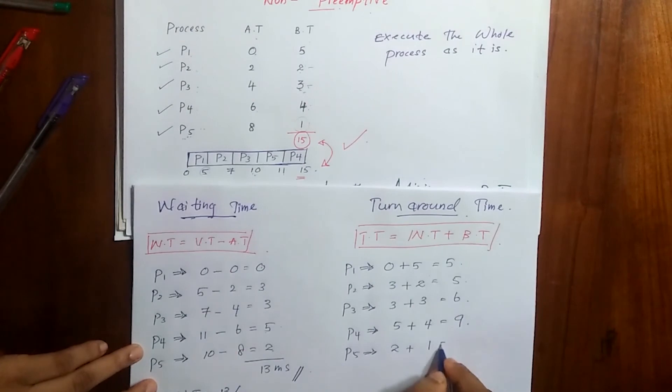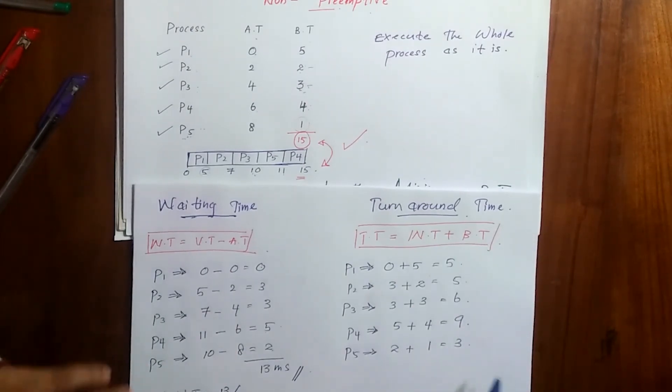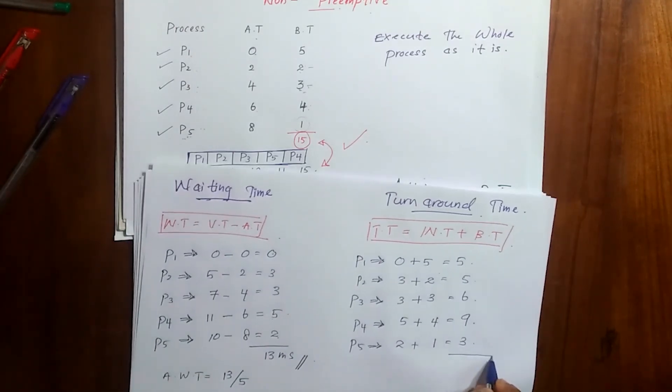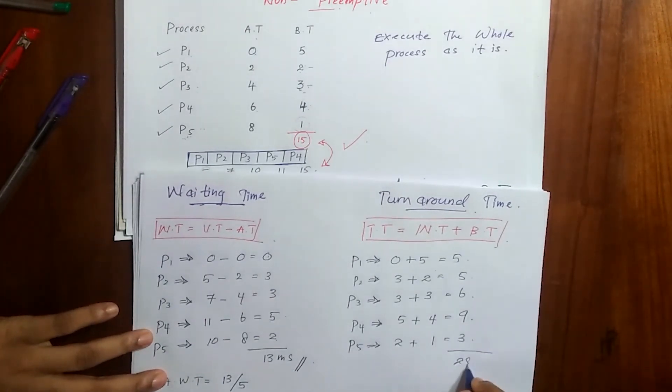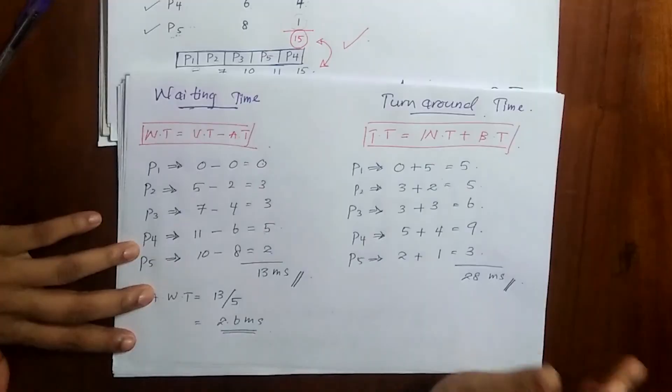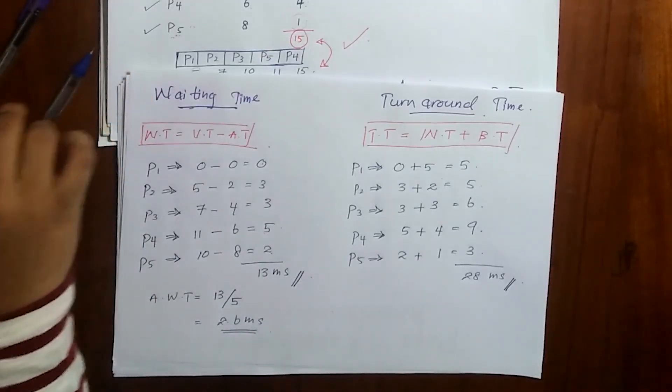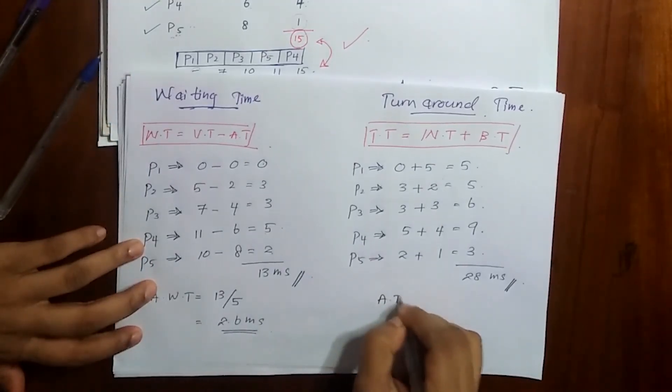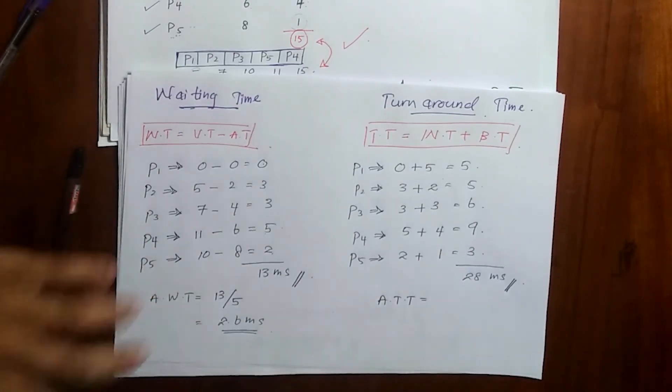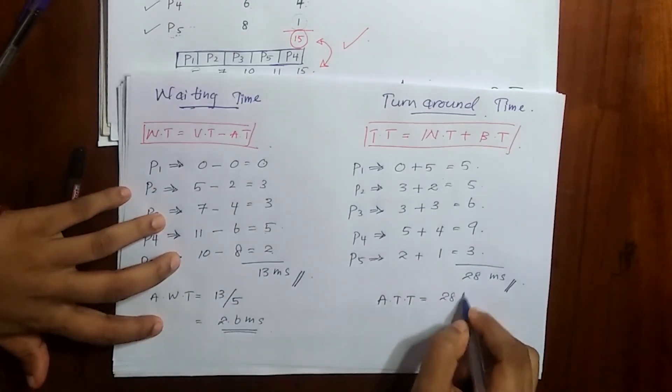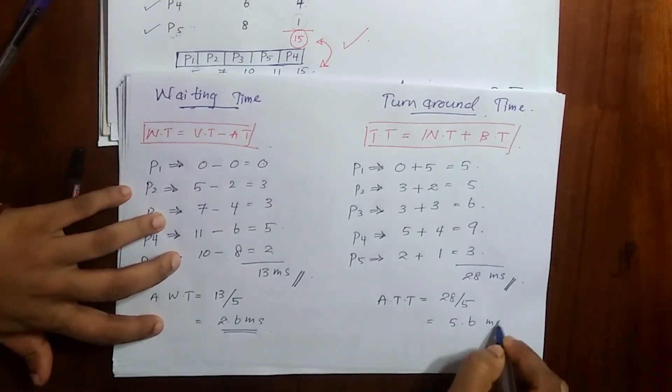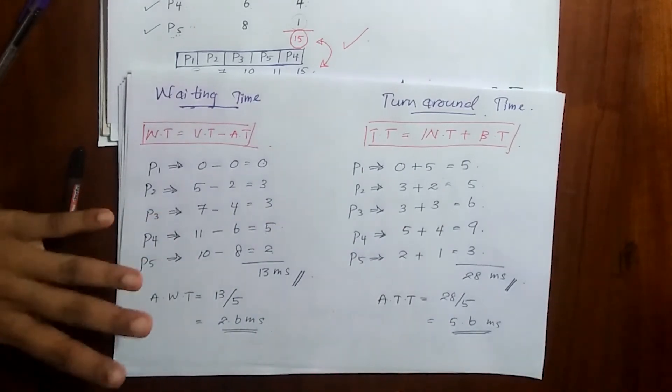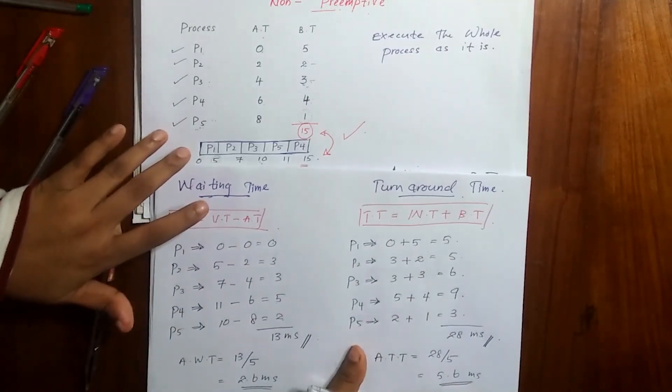Now let's get the total. The total is 28 milliseconds. Then the average turnaround time is 28 divided by 5, which becomes 5.6 milliseconds.